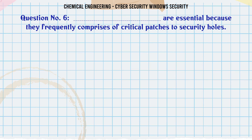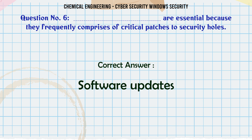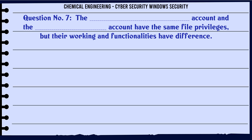Are essential because they frequently comprise critical patches to security holes. A. System Software, B. Utility Software, C. Software Executables, D. Software Updates. The correct answer is Software Updates.